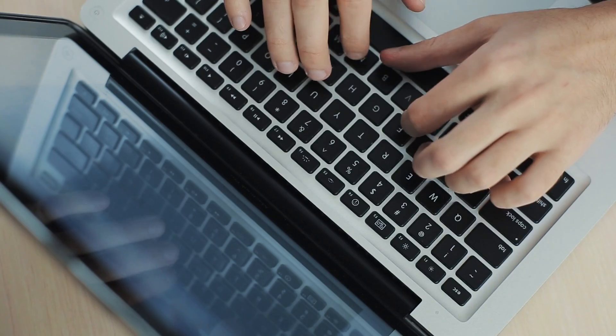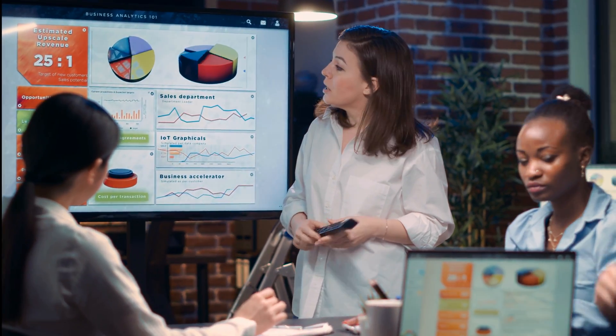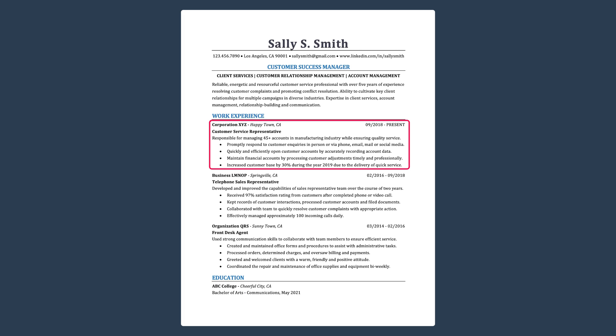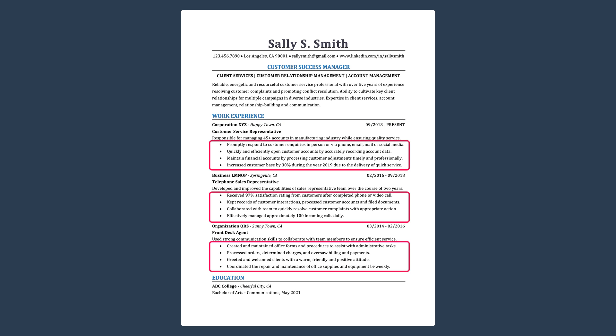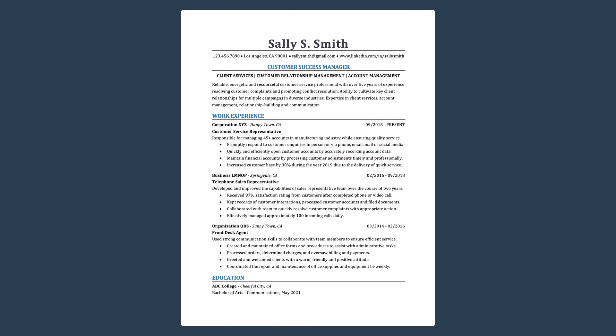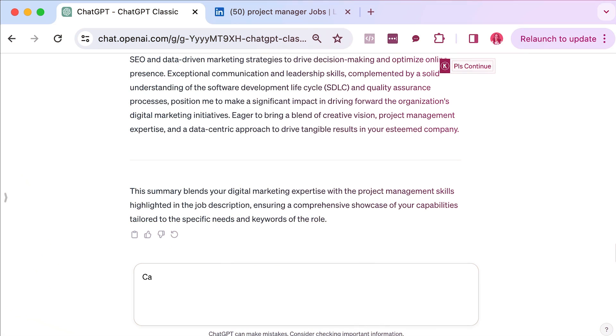Up next, let's talk about how to optimize your work experience section for an ATS friendly resume using ChatGPT. This is where you get to showcase how your past experience makes you the perfect fit for the job. It's not just about listing your past jobs — it's about highlighting your achievements and how you've added value in your previous positions. You'll start by listing your most recent job including the company name, position, and duration of employment. Under each role, add bullet points detailing responsibilities and achievements, and use ChatGPT to help you refine and enhance those bullet points to be more impactful and ATS friendly.